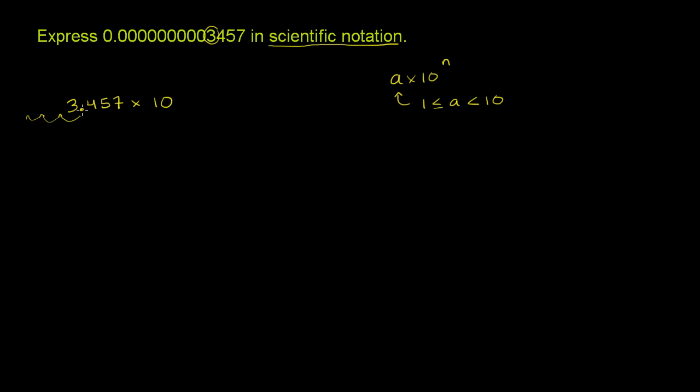When you move an exponent 1 to the left, you're dividing by 10, which is equivalent to multiplying by 10 to the negative 1 power. Let me give you an example here.